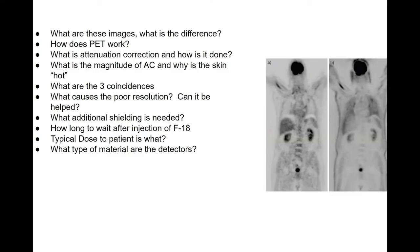Today we're going to look at two PET images and we want you to tell us what is the difference between image A and image B. How does PET work? What is attenuation correction and how is it done? What is the magnitude of attenuation correction and why is the skin quote-unquote hot? What are the three coincidences? What causes the poor resolution of PET and can that be helped? What additional shielding is needed for a PET scanner? How long do you normally wait after the injection of F18 before starting the PET scan? What is a typical dose to the patient and what material are the detectors?